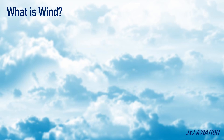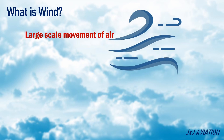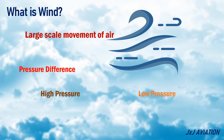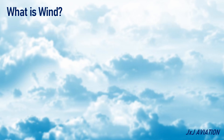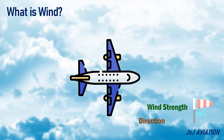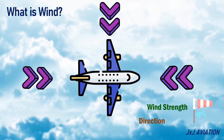First, let's understand what is wind. Wind is used to describe large-scale movement of air. The movement of air is caused by pressure difference in two regions of the atmosphere. Generally, air moves from high pressure to low pressure. The pressure difference is caused by uneven heating of the Earth's surface. The wind strength may vary and can be from any direction. Depending on the direction of the wind and the direction in which an aircraft is flying, the wind may be classified as headwind, tailwind, or crosswind.